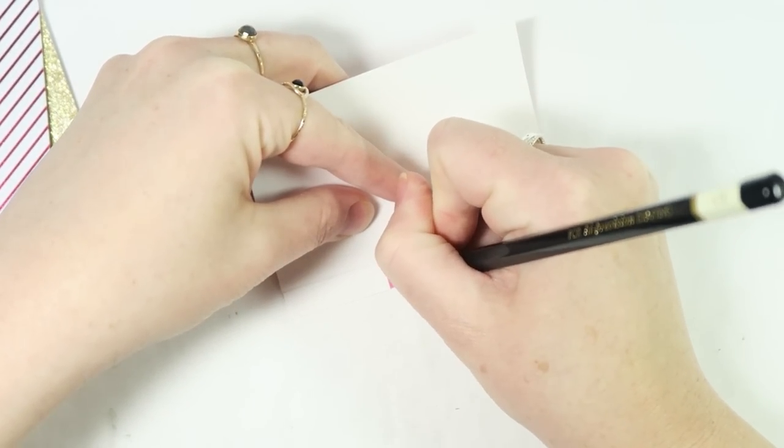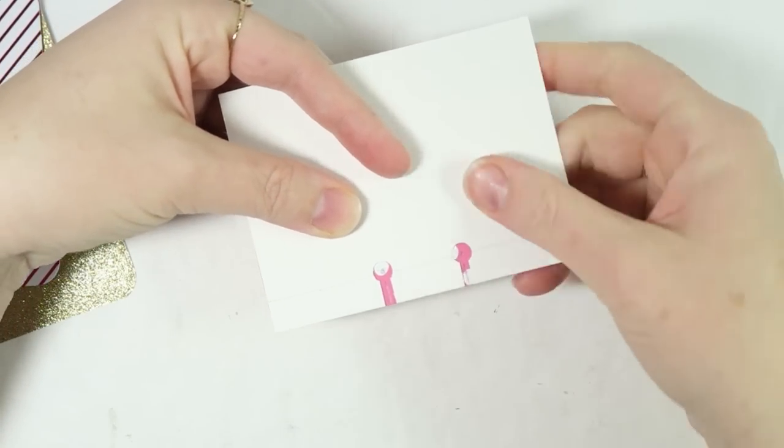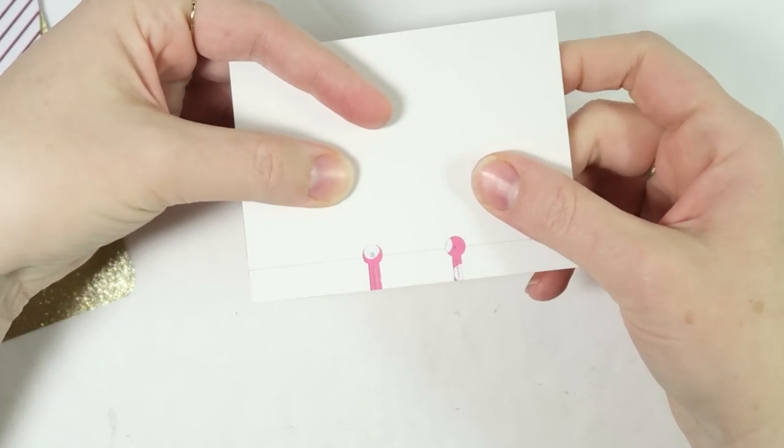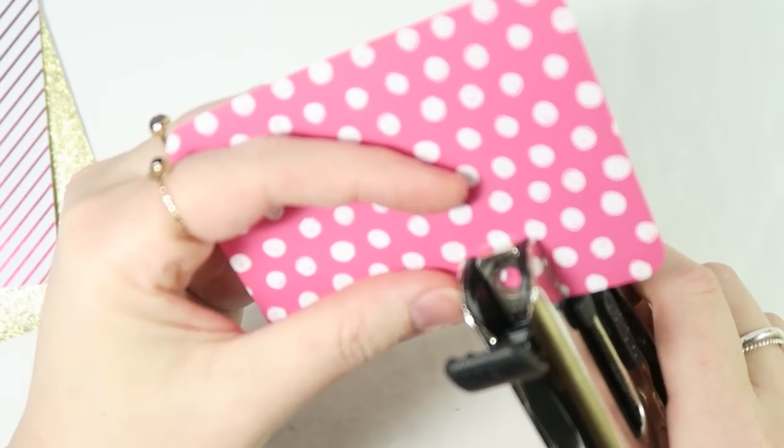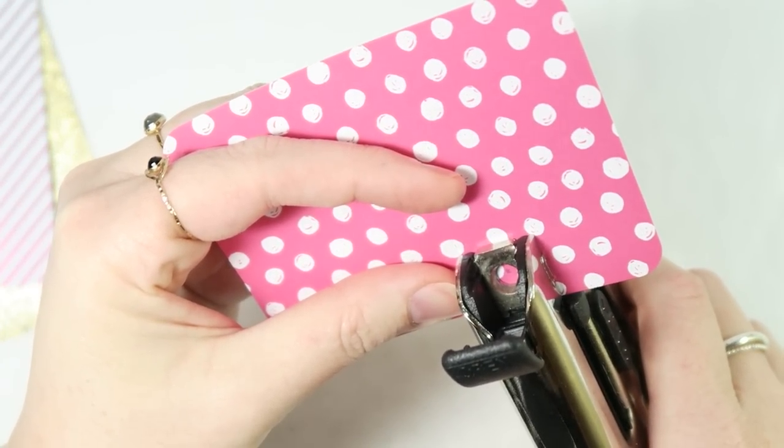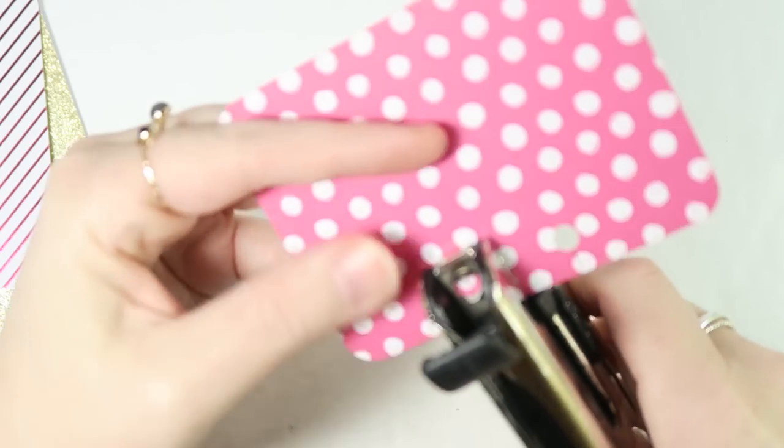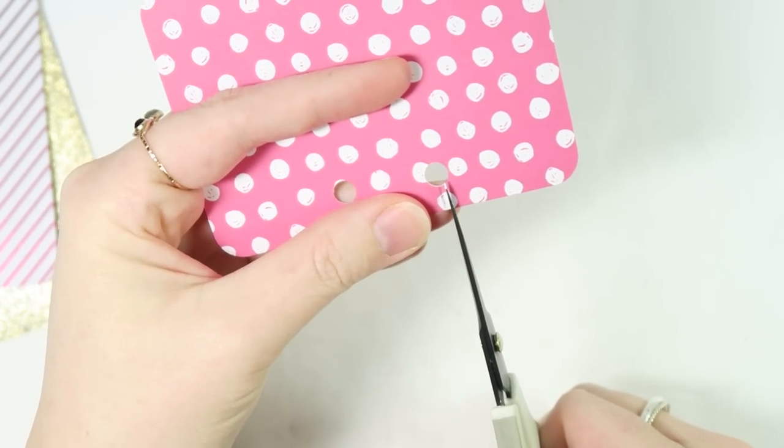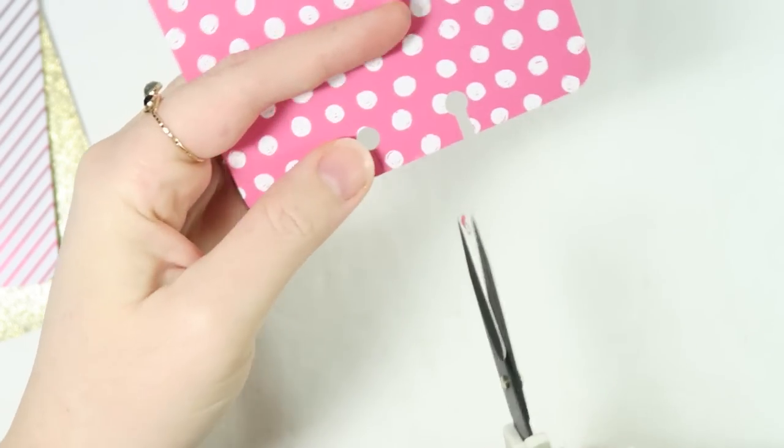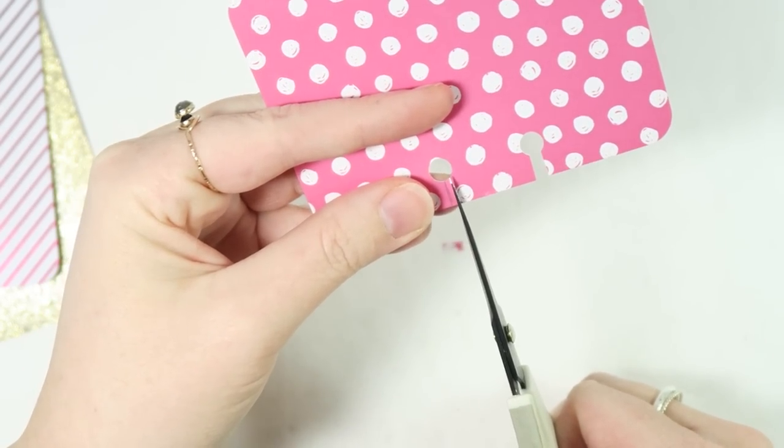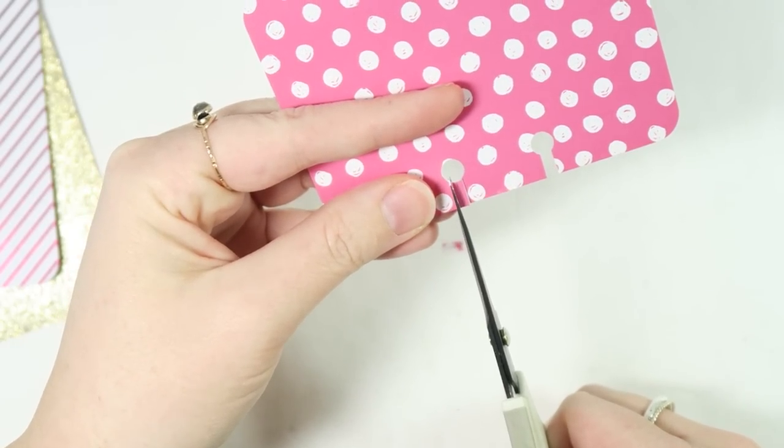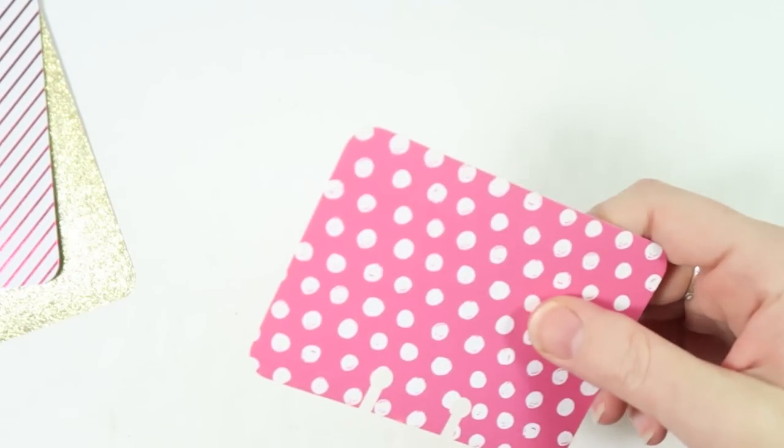You have something that looks like that. You can see the pencil marks I made and then you just repunch your holes again. And then you snip little line pieces like that. And there you go.